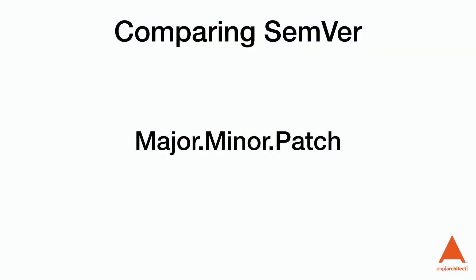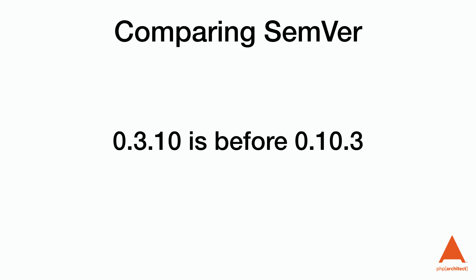When we compare semver numbers, it's important that we work our way left to right and treat each number as a number and not a string. For example, 0.3.10 is ordered before 0.10.3 because the major number is the same, but the minor 10 is greater than 3. And version 0.1.1 is ordered before 1.0.0 because the 1 is greater than 0 in the major version, and all the others become unimportant.